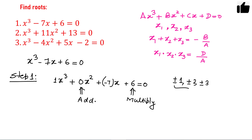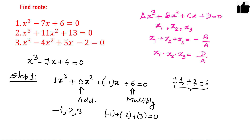Among these factors, find three numbers such that their product is six and their sum is zero. By hit and trial, these numbers are minus one, minus two, and three. If you add minus one plus minus two plus three, that equals zero. And if you multiply minus one times minus two times three, that equals six.